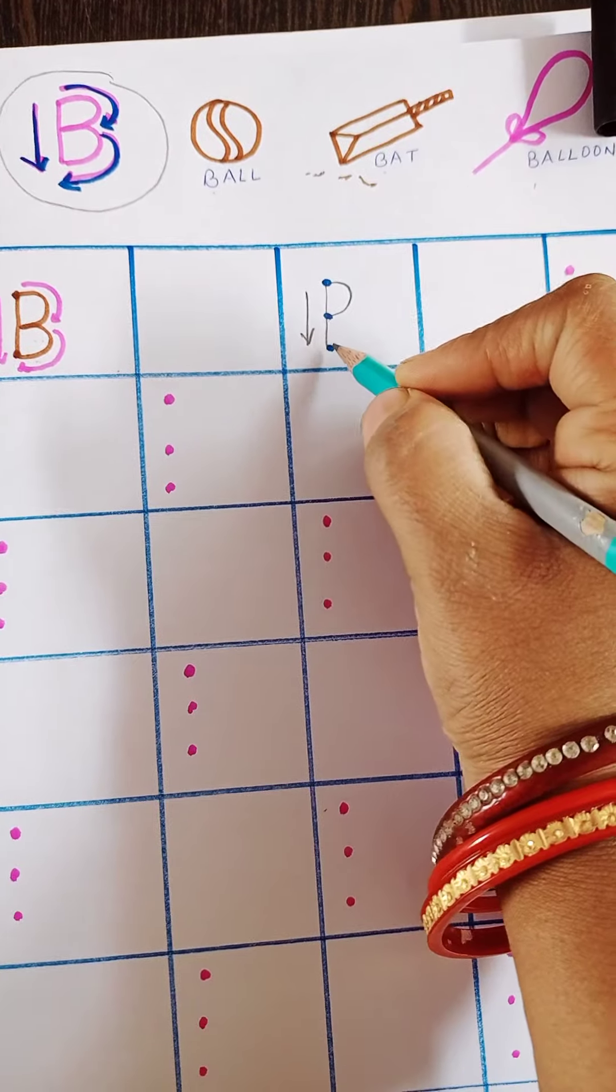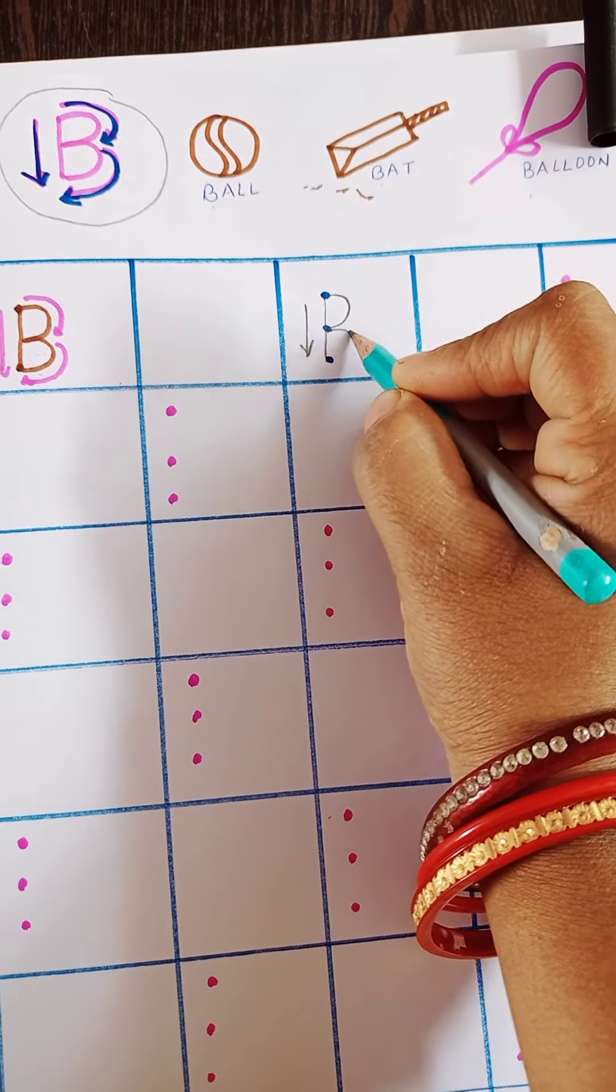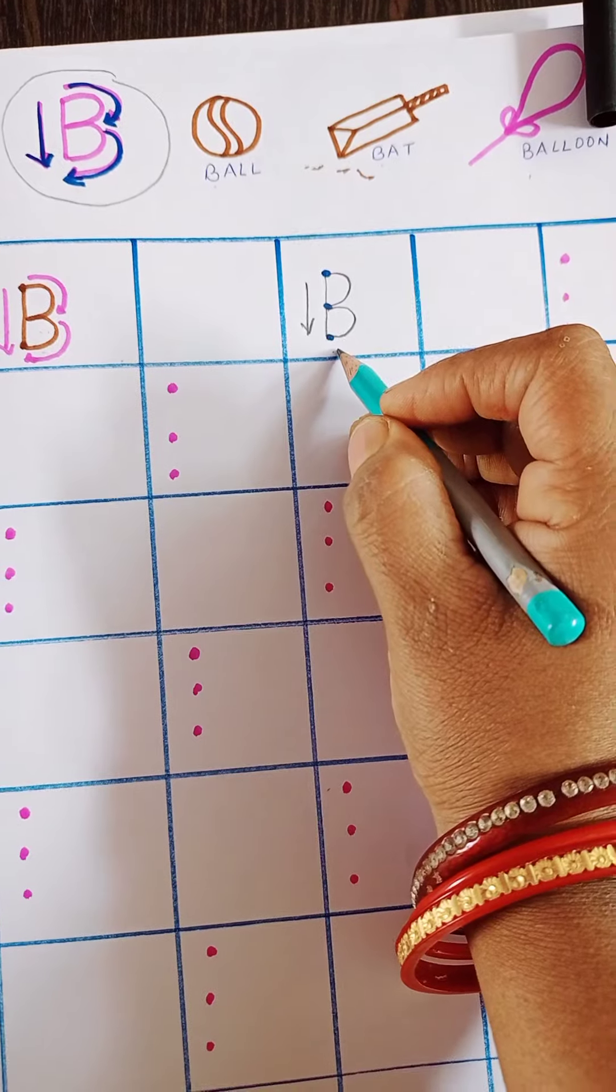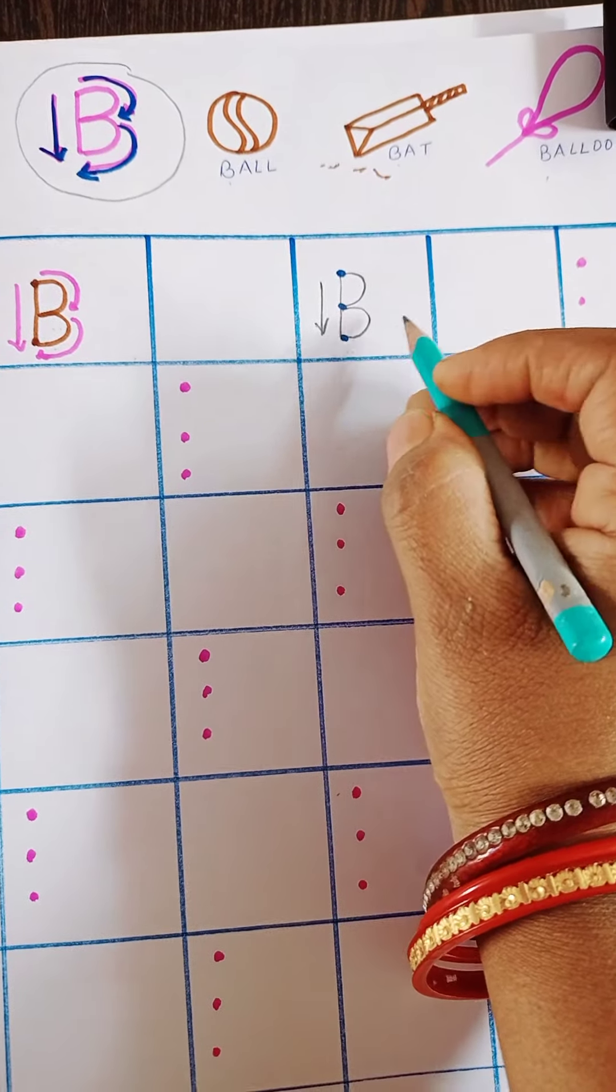Now, again, from middle dot to last dot, we will make another kar. In this way, what I have written? B ba ball.